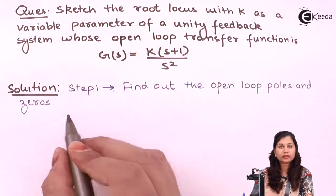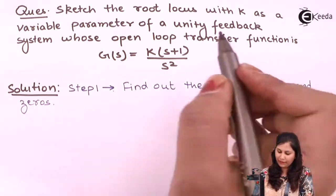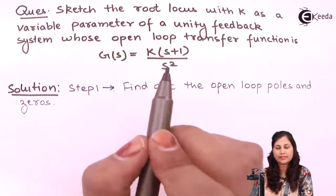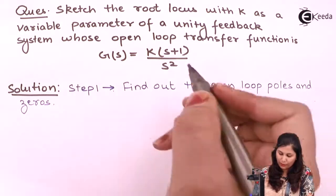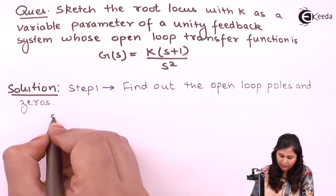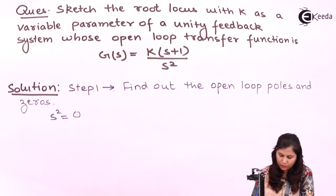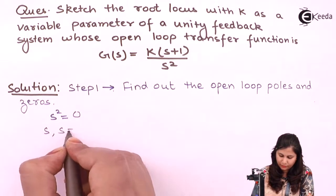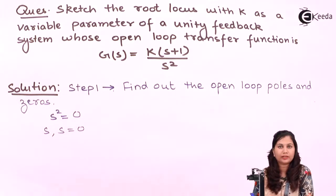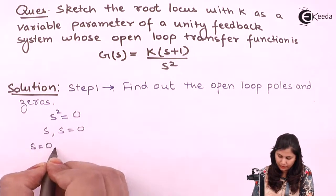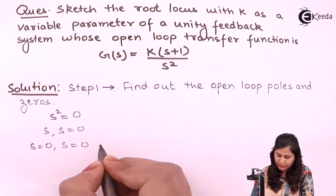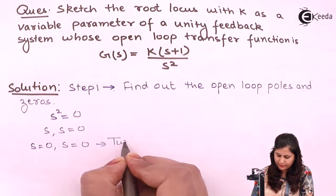To find out the poles, we have to equate the denominator term to zero. So s² = 0, giving us two poles at the origin — that is s = 0 and s = 0. These are the two poles.